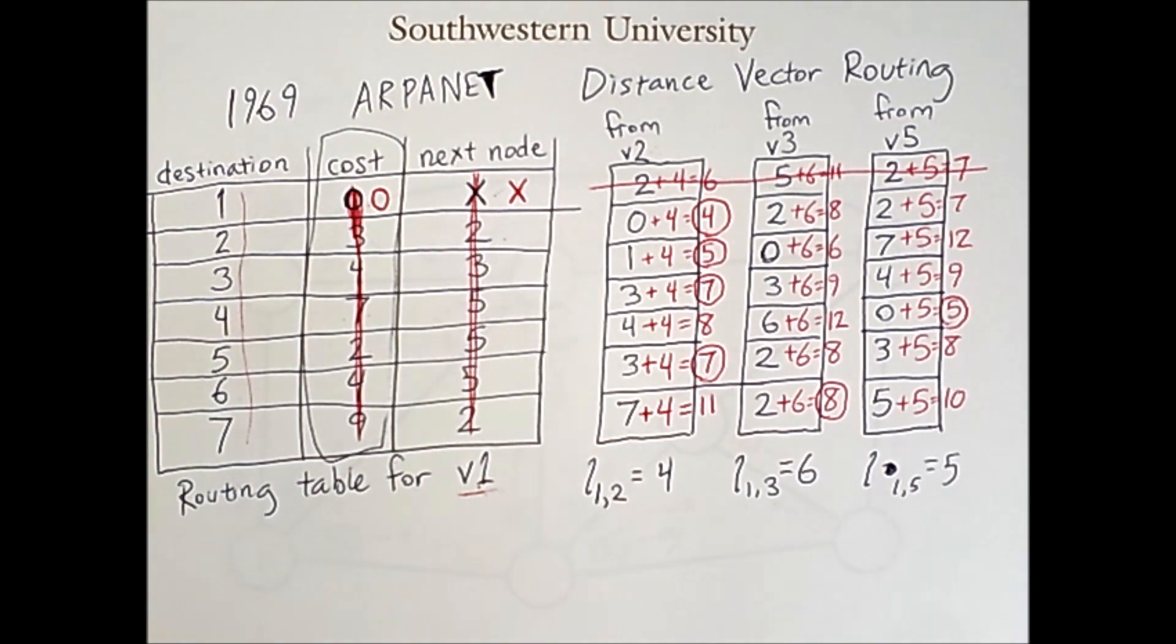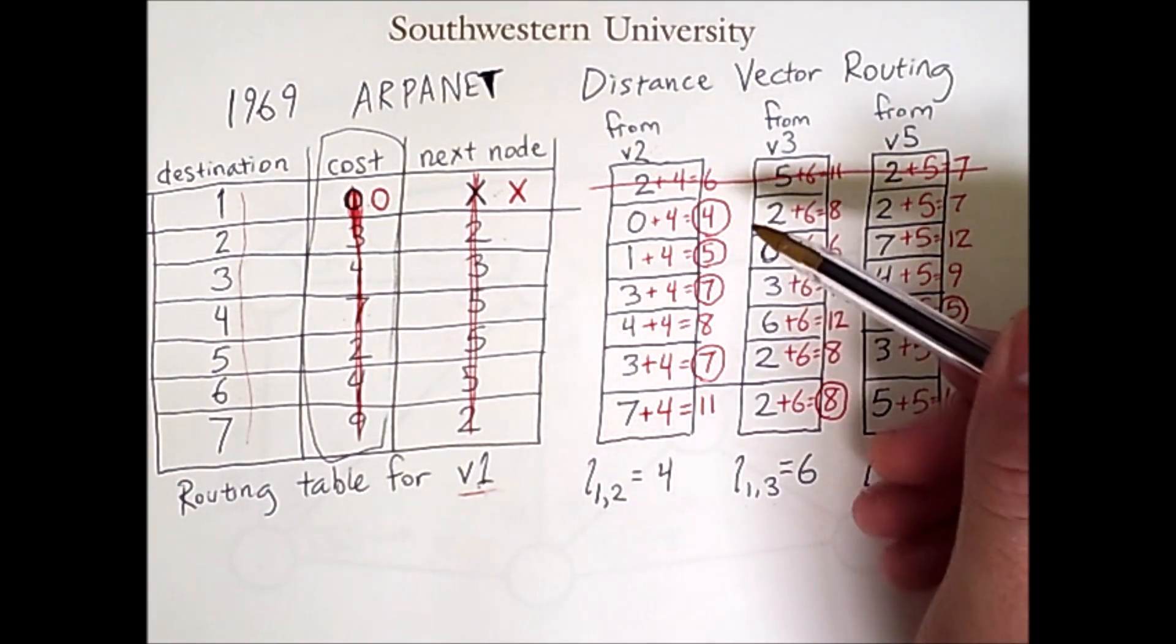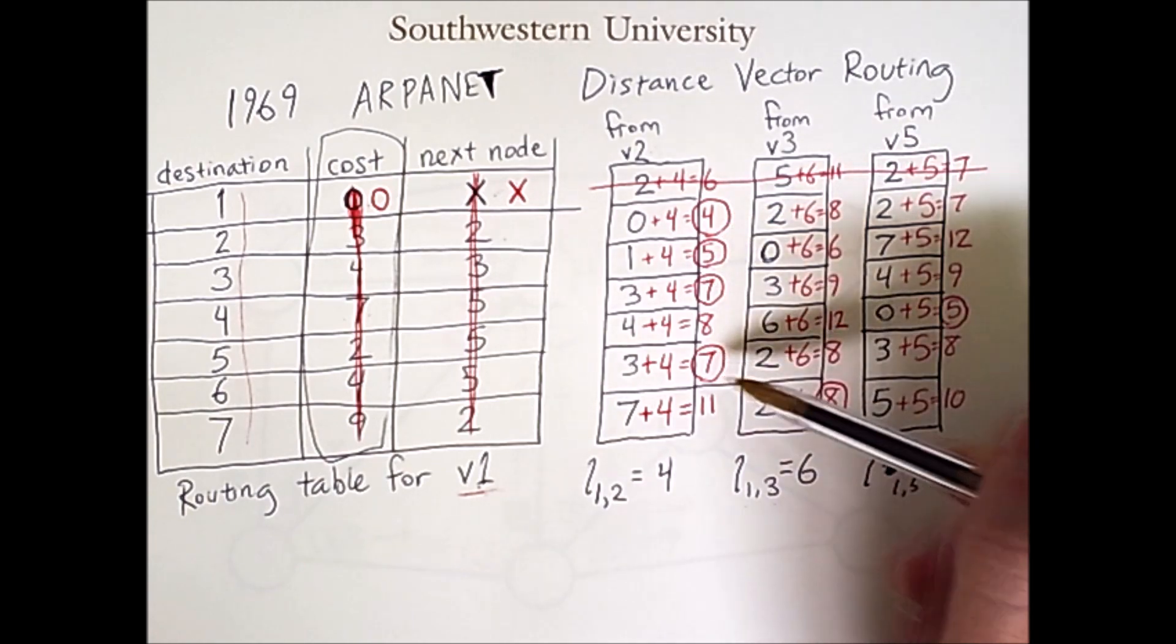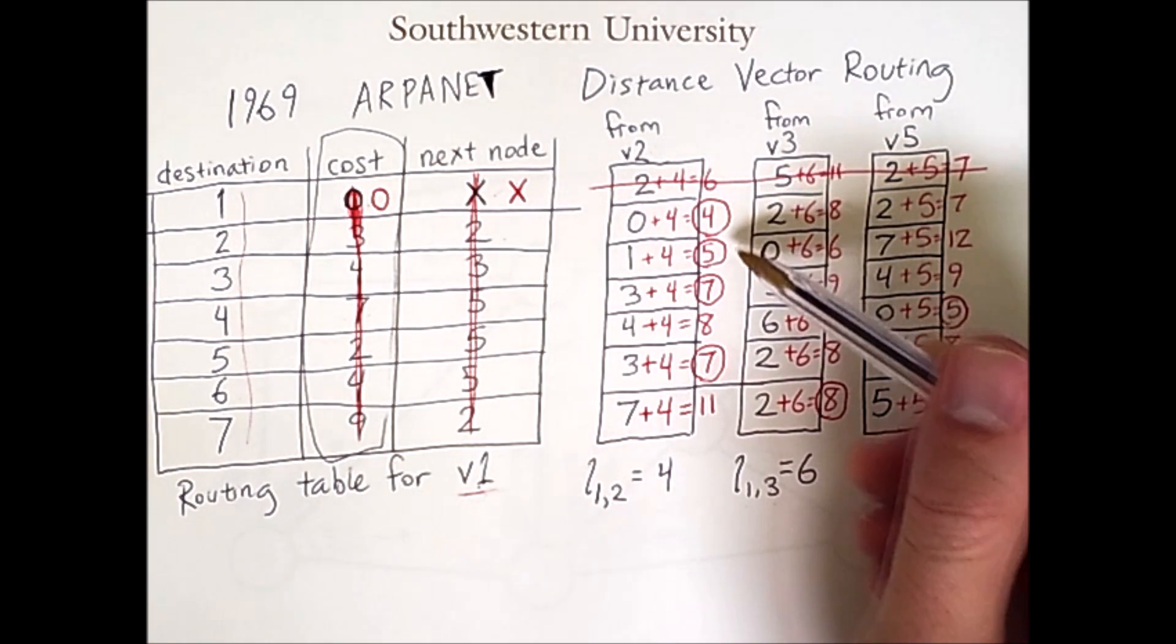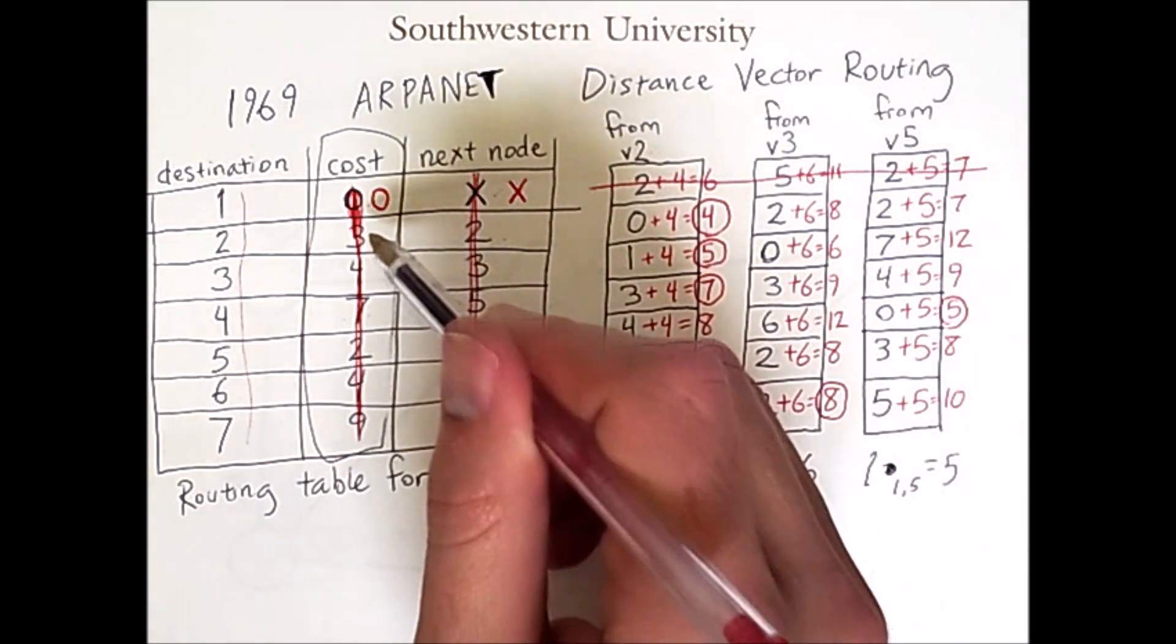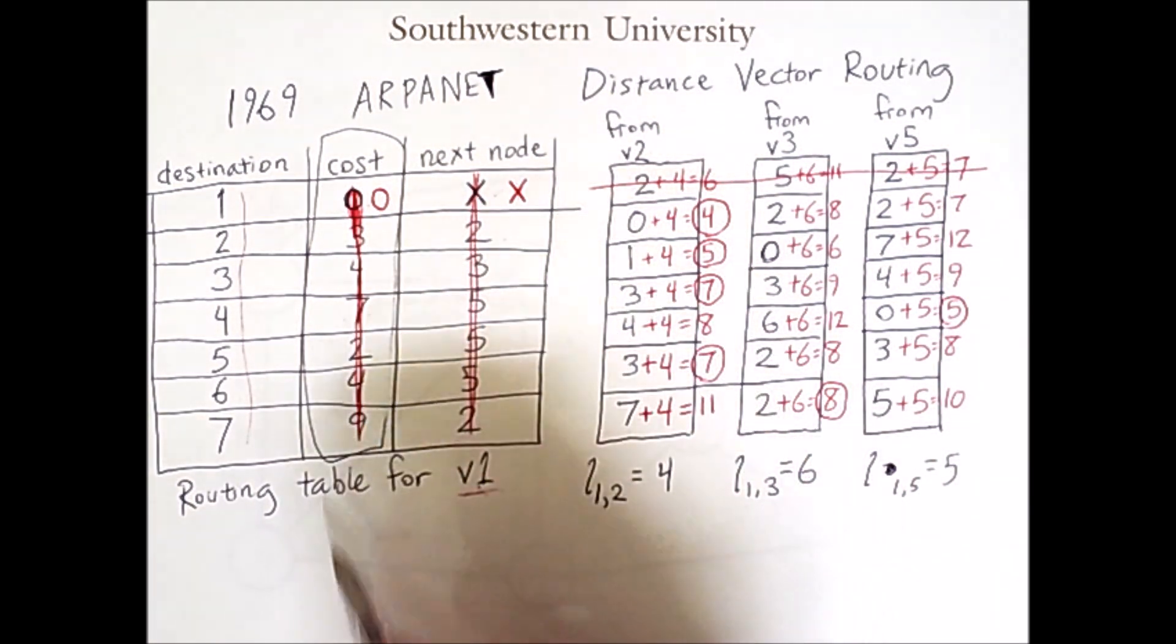Now, this example did not have any ties. But if there were ties, we could either break them randomly or we could use some other information to pick the better route. But for this example, we'll simply assume we have no ties and move on. In each case, I've identified the shortest route or the lowest cost route. And so these minimal costs are the values which will then go into the cost column of our table.